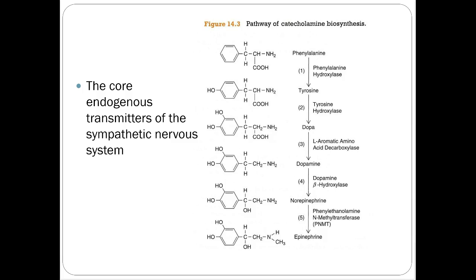Catecholamine biosynthesis shows that dopamine, norepinephrine, and epinephrine are all synthesized from each other. Dopa goes to dopamine, which is converted to norepinephrine, which is converted to epinephrine — and epinephrine is another word for adrenaline. We use norepinephrine as our archetypical sympathomimetic because it's the happy medium between all of them.